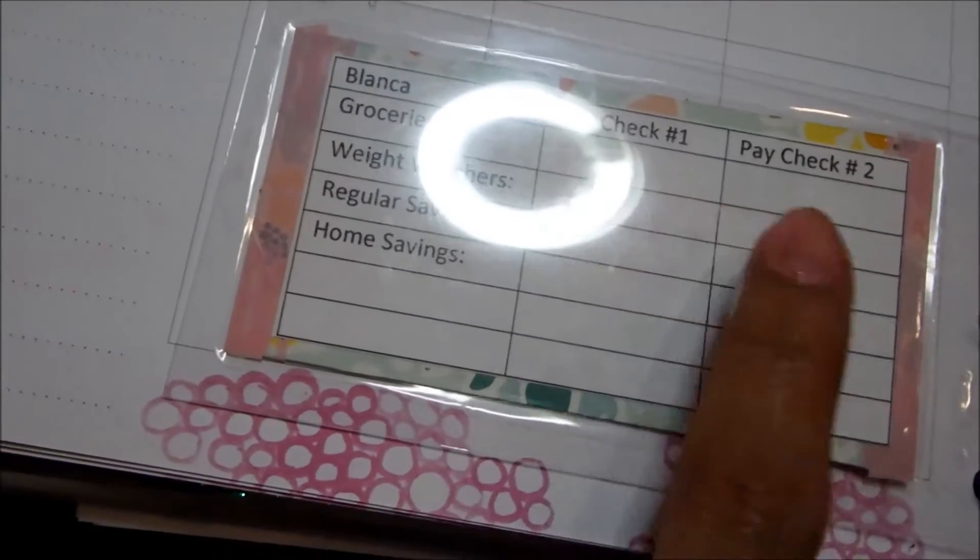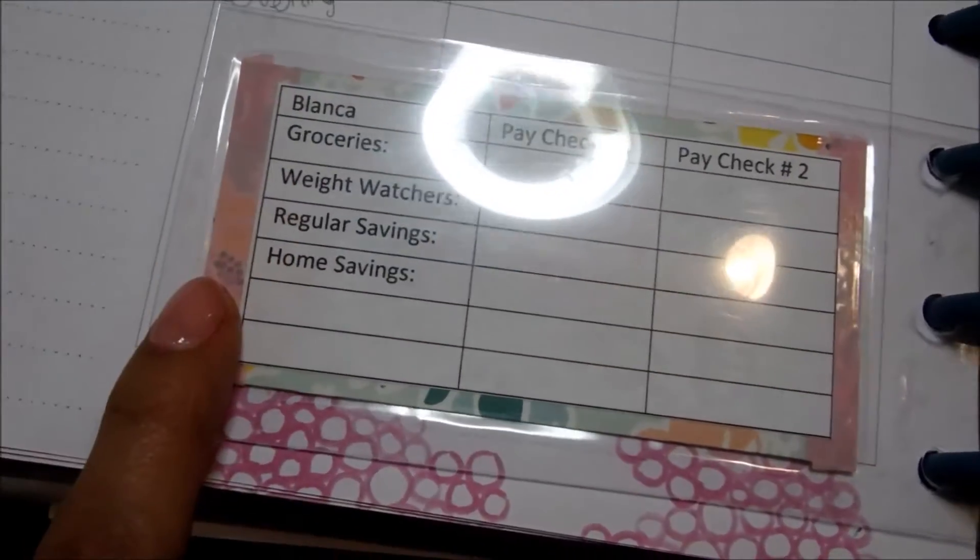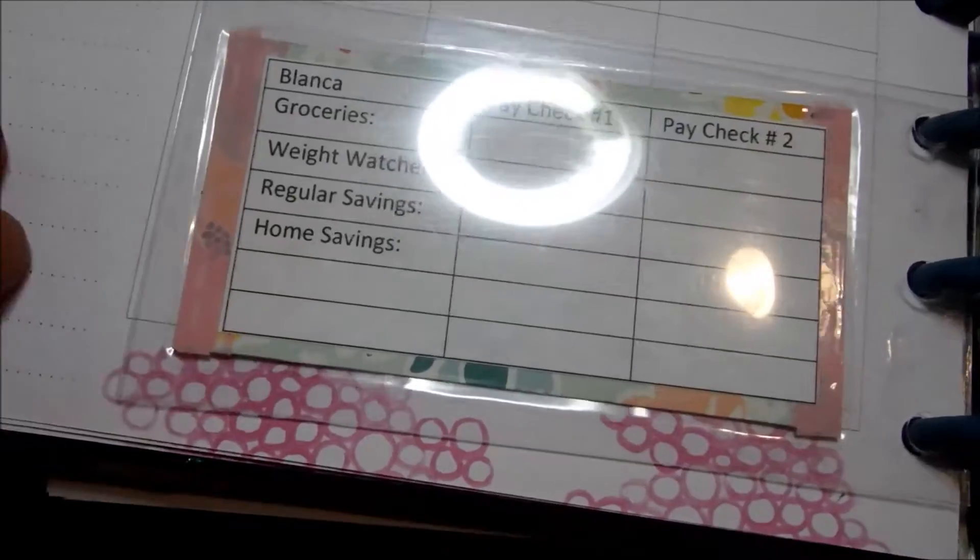And then you turn it over and you have my check, paycheck number one, paycheck number two. I'm sorry about that glare. And then the bills we have to pay with my check.